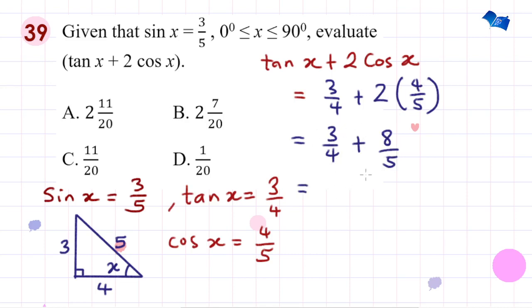3 over 4 plus 8 over 5. We look for the LCM of 4 and 5, that would be 20. 4 into 20 is 5, 5 times 3 is 15. 5 into 20 is 4, times 8 is 32. Now we have 15 plus 32, which is 47.